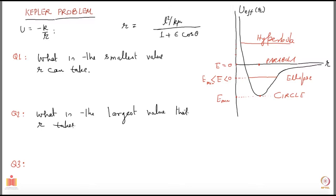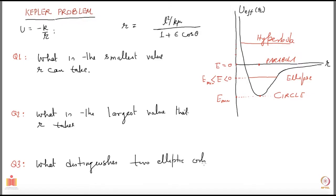You may also wish to think about what distinguishes two elliptic orbits of the same eccentricity. Of course you will think of scale — one could be smaller, another could be larger — they may have the same eccentricity, but what is controlling them? We will make this question more precise later, but let us write it down: what distinguishes two elliptic orbits of same eccentricity?